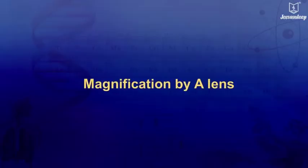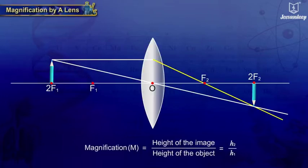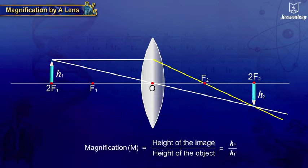A Lens. The magnification produced by a lens is the ratio of height of the image, H2, and the height of the object, H1. The magnification represented by M produced by a lens is equal to height of the image upon height of the object.